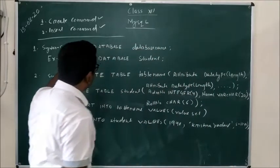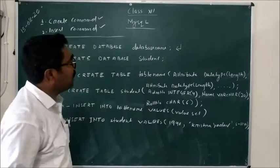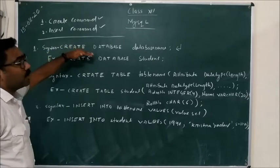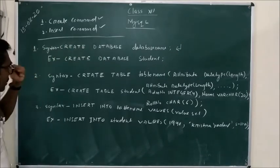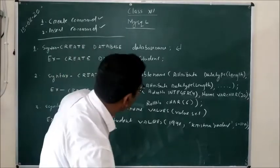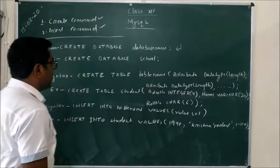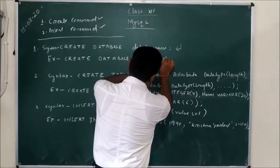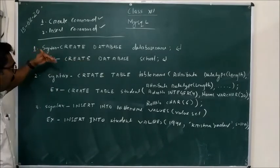The first command is CREATE DATABASE followed by the database name. Press Enter. If there is no problem, it will show a message like 'one database created,' and then the MySQL prompt will appear again. For example, if the database name is 'school,' you write CREATE DATABASE school, press Enter, and you get the confirmation message.